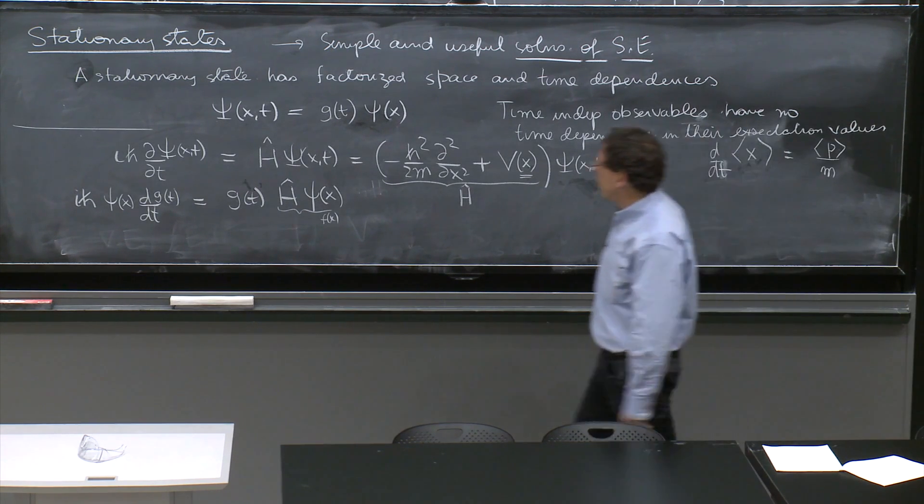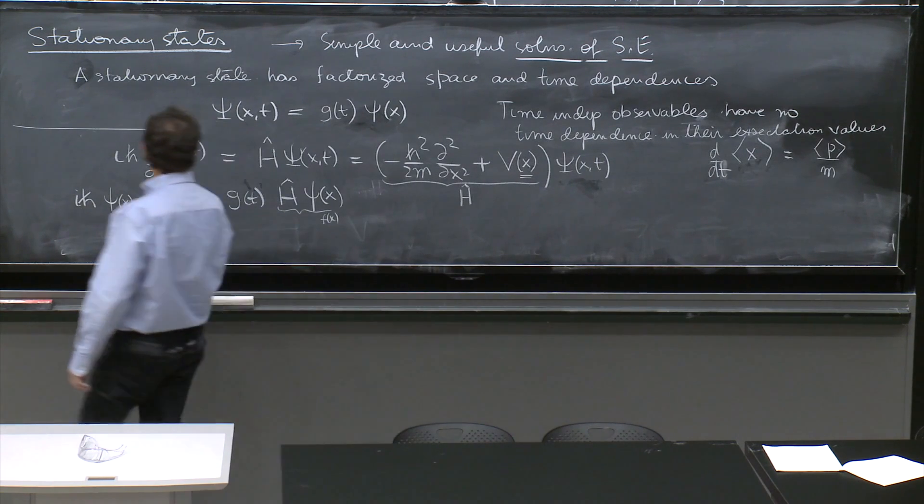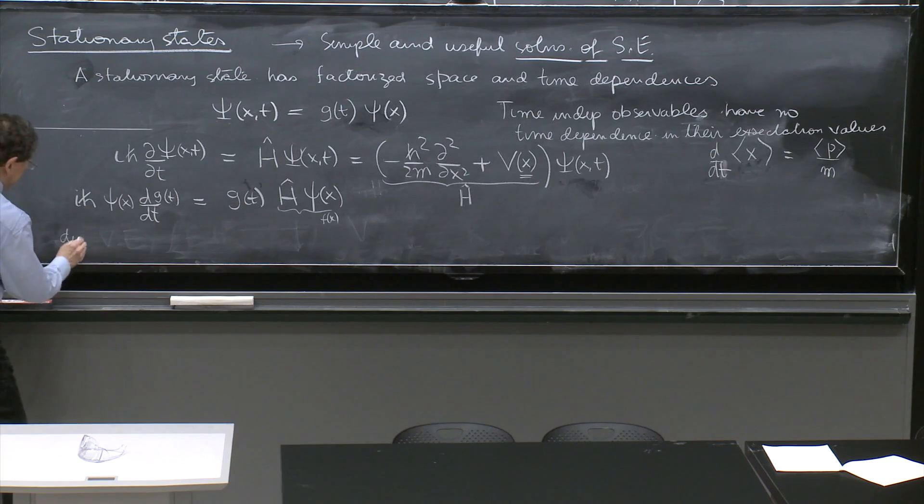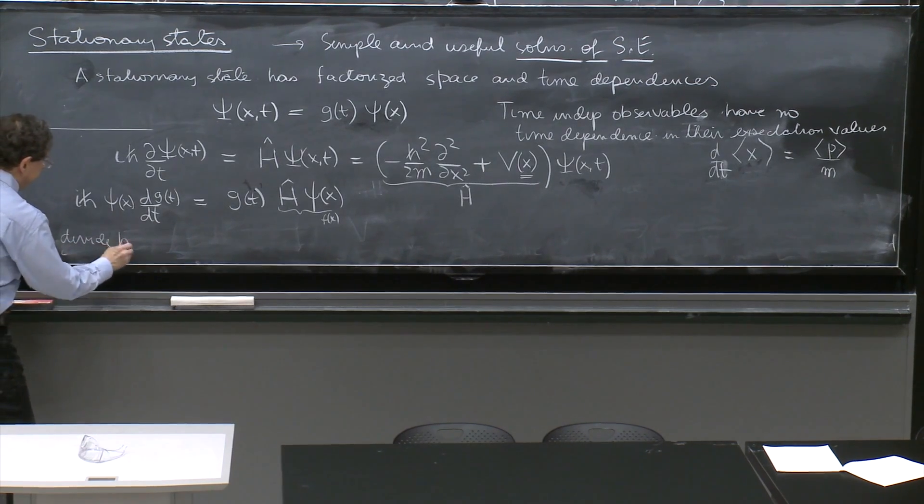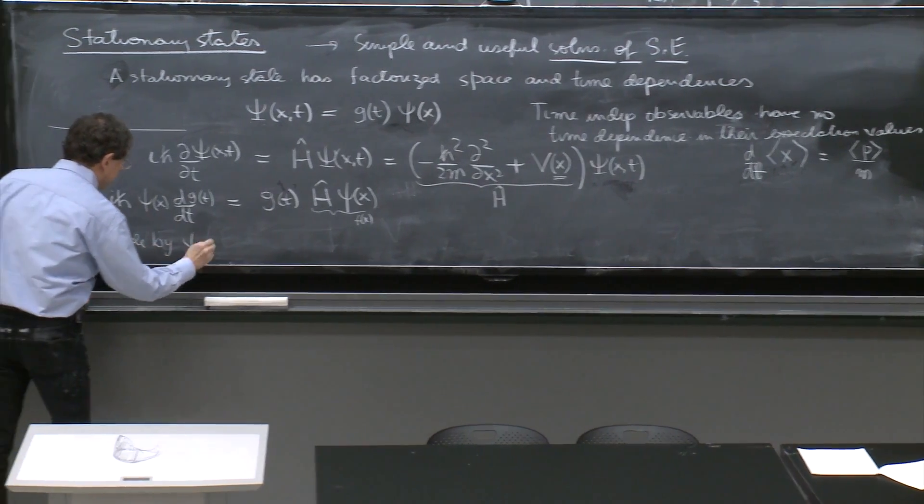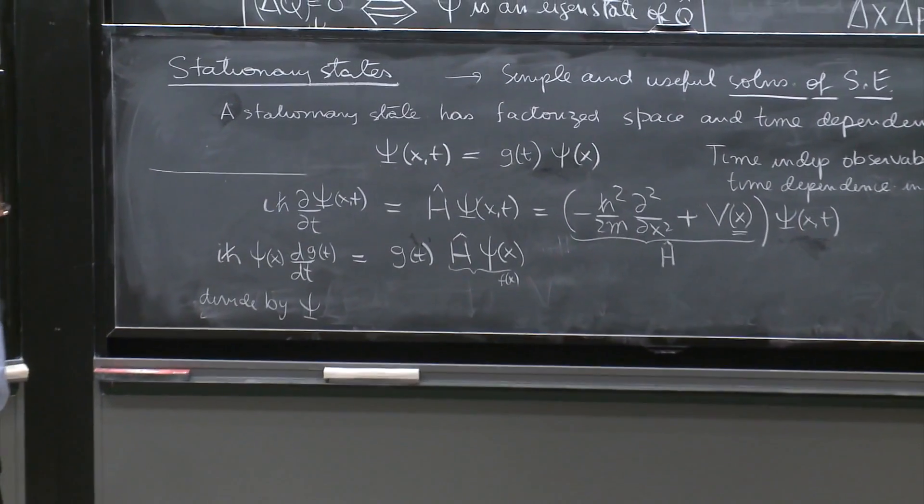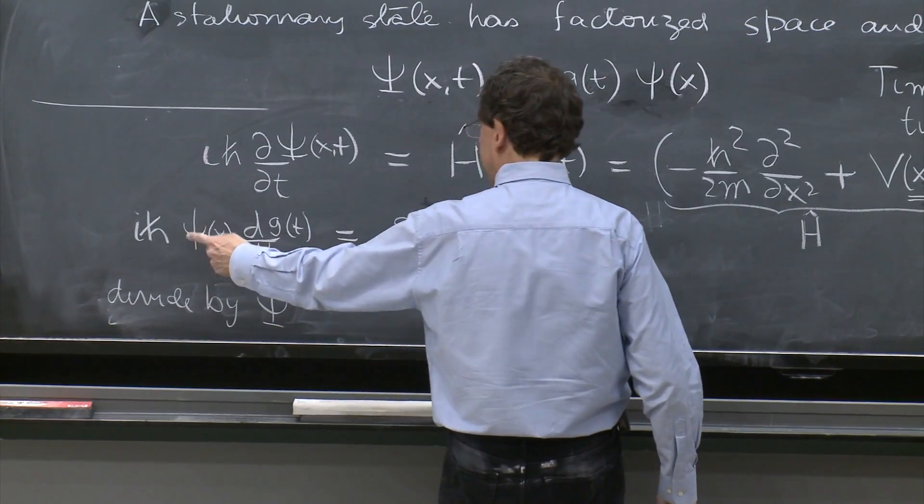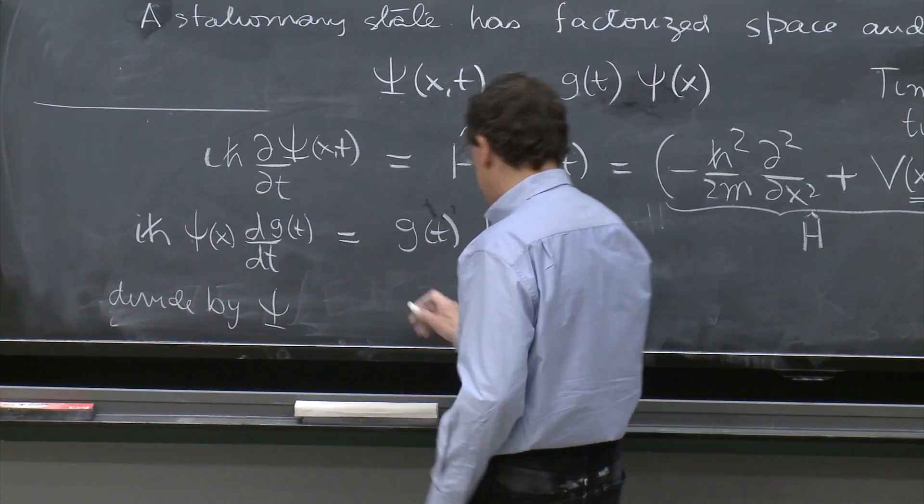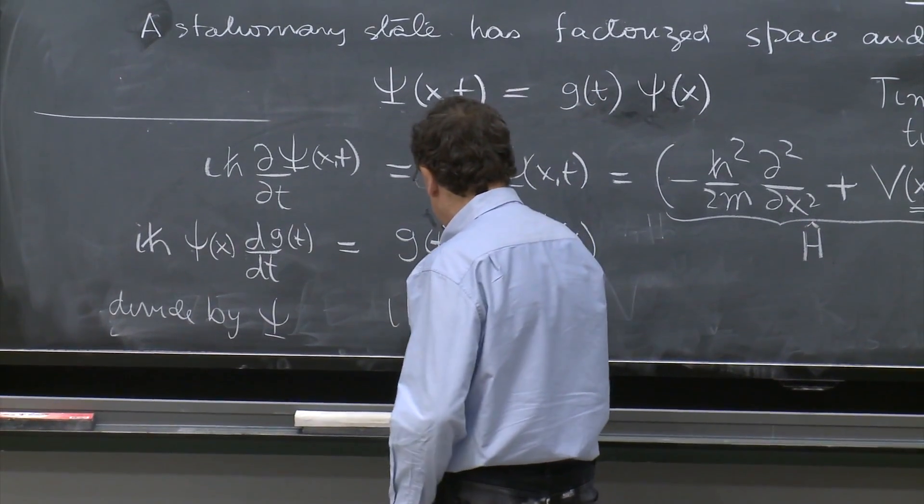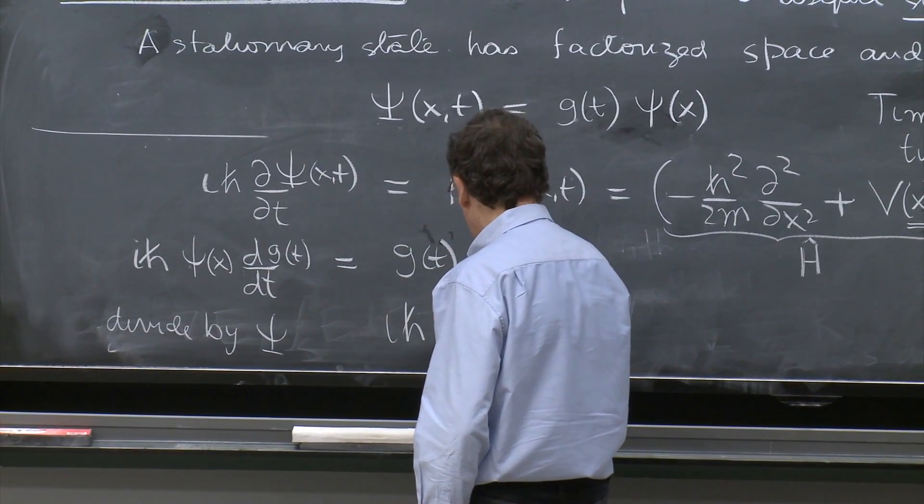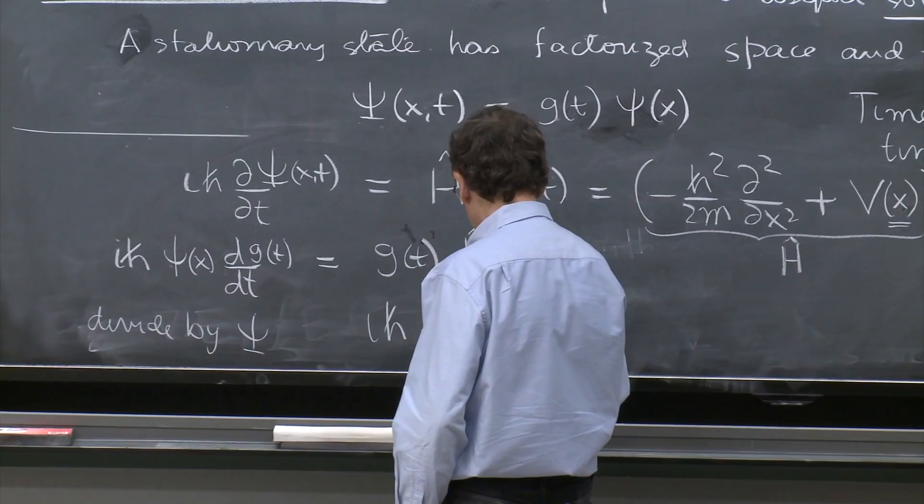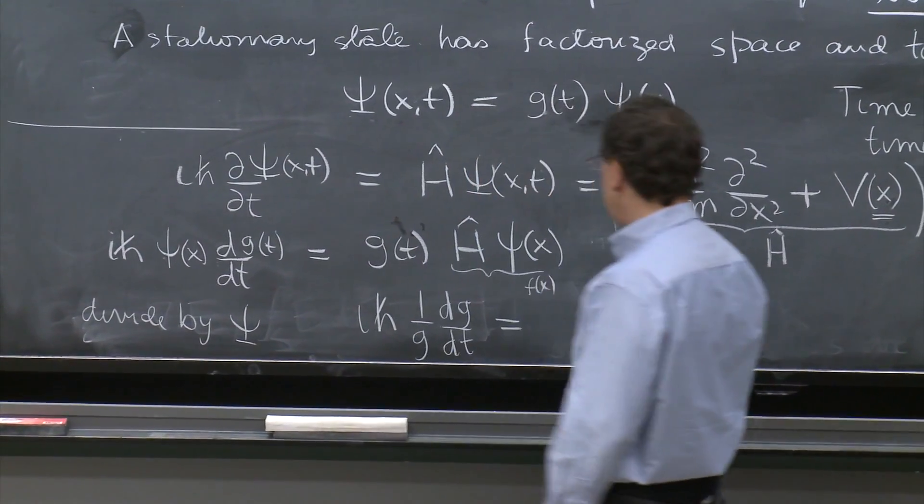Next step. Divide this whole equation by the total wave function. Divide by psi. But if you divide by psi, you cancel the little psi here and you get a 1 over g. So you get i h-bar 1 over g dg/dt is equal.